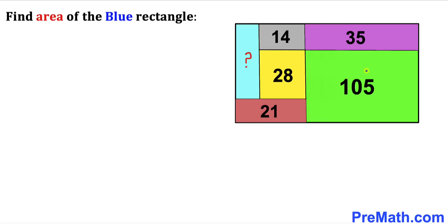In this video we have got this big rectangle that consists of a bunch of smaller rectangles, as you can see in this diagram, such that the area of this green rectangle is 105 square units. The area for this purple rectangle is 35. The area for this gray rectangle is 14. The area for this yellow rectangle is 28. And finally the area for this brown rectangle is 21 square units.